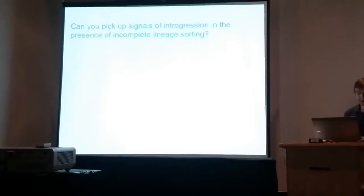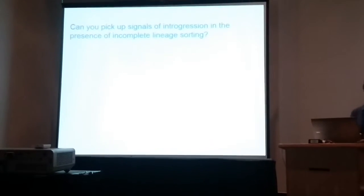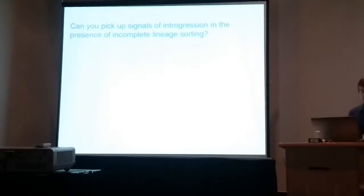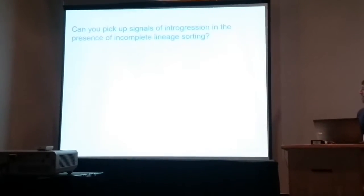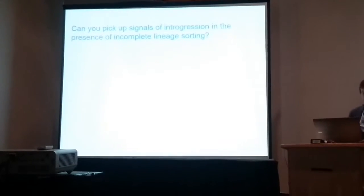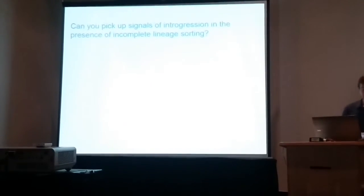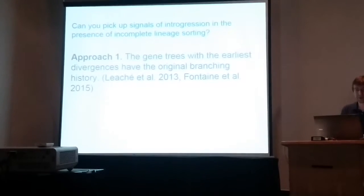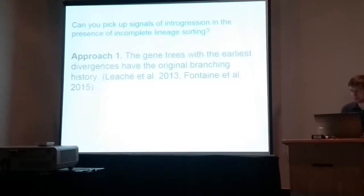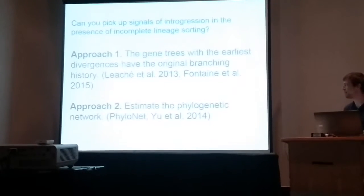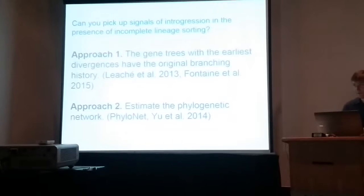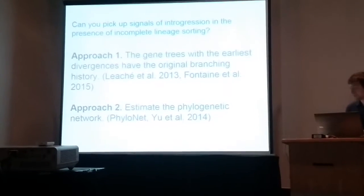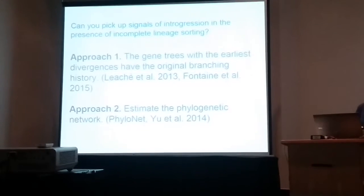In short, the informative gene trees have a hefty amount of heterogeneity that's not just due to lack of information. A major source of this is certainly incomplete lineage sorting, but in both evolutionary scenarios I've talked about — either parallel speciation or mitochondrial introgression — introgression plays a major role. So my question is: can I actually pick up signals of introgression despite having this much incomplete lineage sorting? I took two approaches. The first was based on gene tree topologies with the earliest divergences representing the original branching history. My second approach was to estimate the phylogenetic network using programs like PhyloNet.